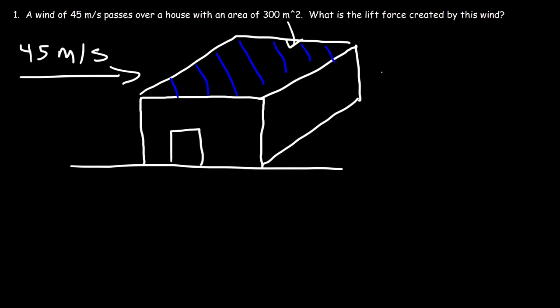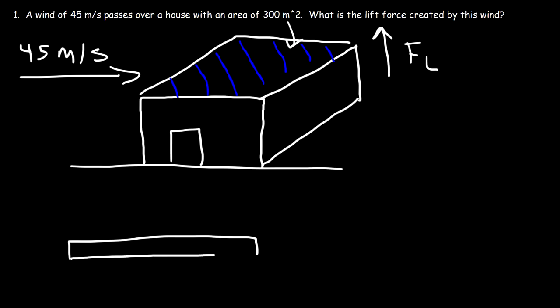How can we calculate the lift force generated by this wind, and how does this process even work? Let's look at just a section of the roof from the side view. As the wind passes over the top part of the roof, it creates a low pressure region. According to Bernoulli's principle, whenever the velocity of a fluid is high, the pressure is low. And when the velocity is low, the pressure is high.